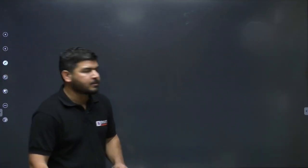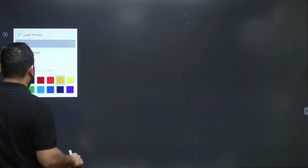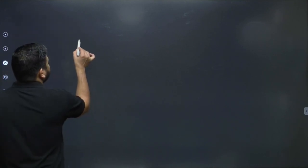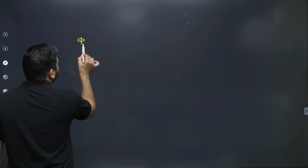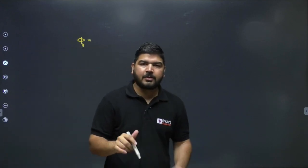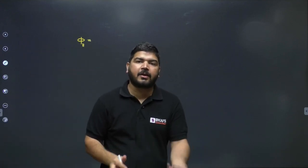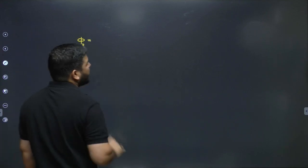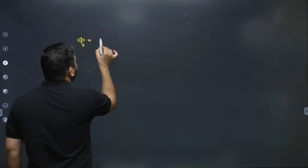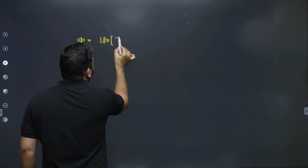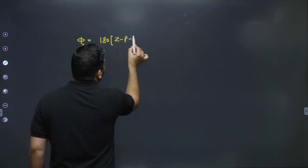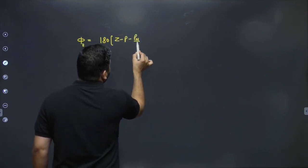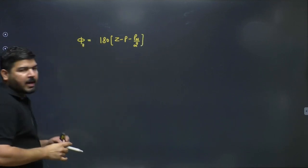Let's understand the concept of the Nyquist plot. There is a formula and I call it 511. If you know how to calculate this 511, you can check the stability of the closed-loop system and the number of encirclements of minus one in the Nyquist plot. The formula for 511 is: 511 = 180 × (Z − P − PW/2).